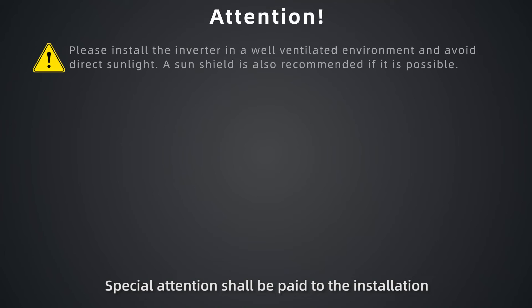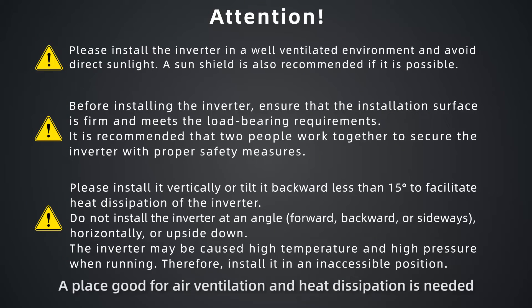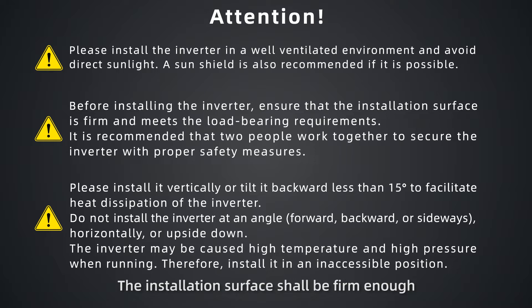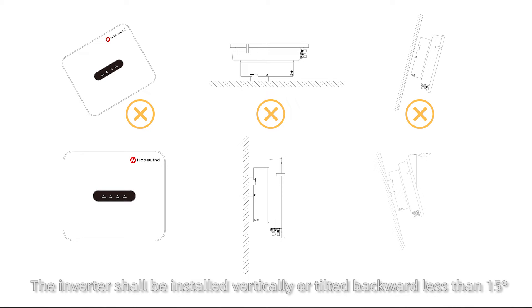Special attention shall be paid to the installation environment of the inverter. A place good for air ventilation and heat dissipation is needed, and it is recommended to install a sun shield. The installation surface shall be firm enough and meet the load-bearing requirements. The inverter shall be installed vertically, or tilted backward less than 15 degrees.